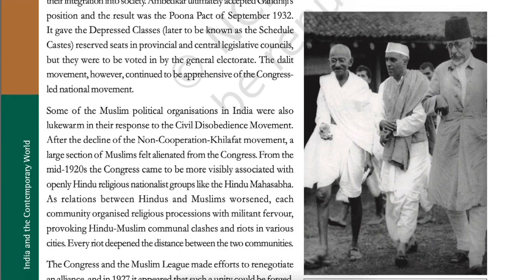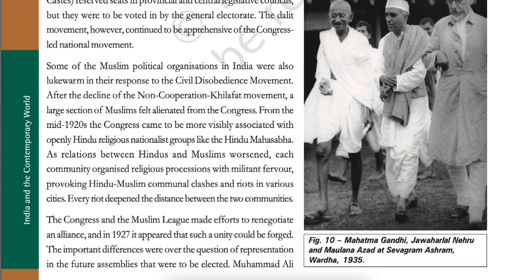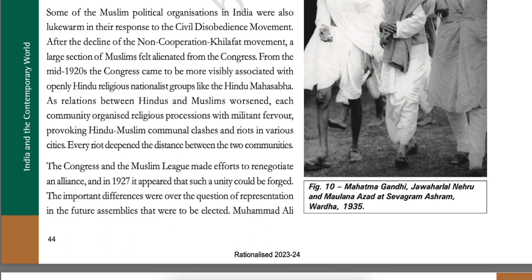Ambedkar ultimately accepted Gandhiji's position and the result was the Poona Pact of September 1932. It gave the depressed classes reserved seats in provincial and central legislative councils, but they were to be voted in by the general electorate. The Dalit movement, however, continued to be apprehensive of the Congress-led national movement. Some Muslim political organizations in India were also lukewarm in their response to the civil disobedience movement. After the decline of the non-cooperation Khilafat movement, a large section of Muslims felt alienated from Congress. From the mid-1920s, the Congress came to be more visibly associated with openly Hindu religious nationalist groups like the Hindu Mahasabha.